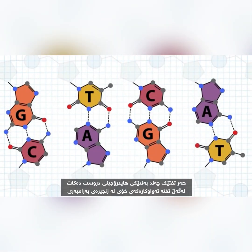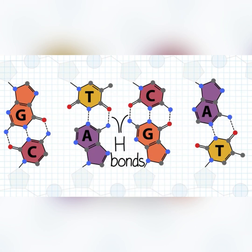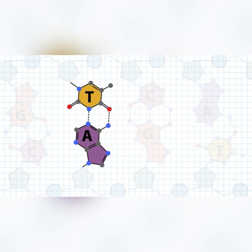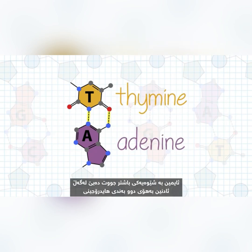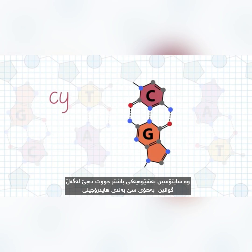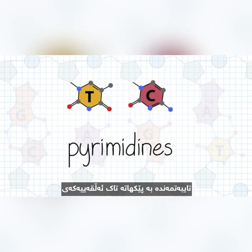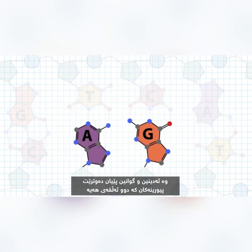Each base forms multiple hydrogen bonds with its complementary base on the opposite strand. Bound together by hydrogen bonds, each unit is called a base pair. Thymine preferentially pairs with adenine through two hydrogen bonds and cytosine preferentially pairs with guanine through three hydrogen bonds. Thymine and cytosine are called pyrimidines, characterized by their single ring structure, and adenine and guanine are called purines, which have double rings.